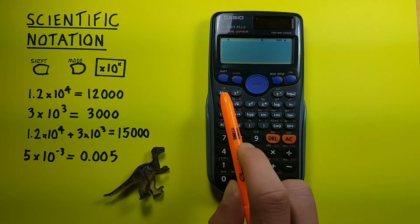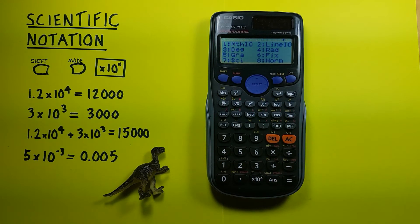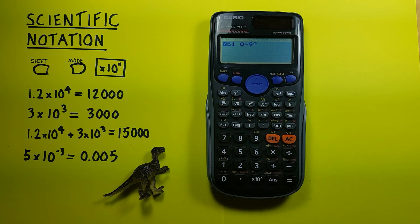To do that we press shift, and then the mode key, that brings up this menu here, and we want to choose number 7, the SCI key. So 7, and then it'll ask us this, SCI 0 to 9, this is asking us how many decimals we want to include, or how many significant figures we want. For this example, we'll just go with 2.